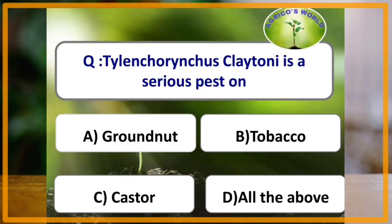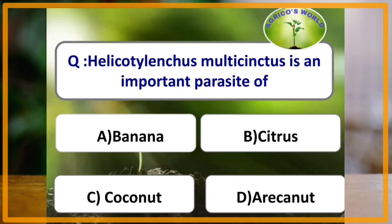Tylenchorhynchus claytoni is a serious pest on tobacco. Helicotylenchus multicinctus is the important parasite of banana.